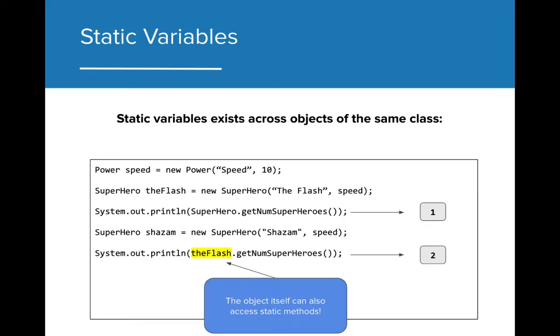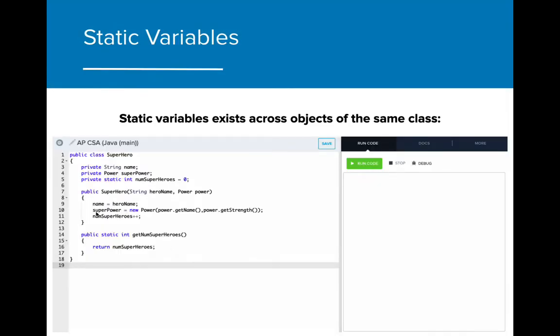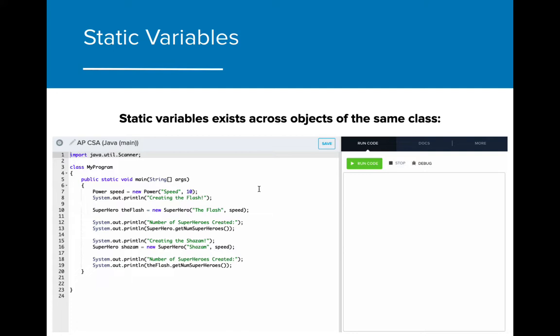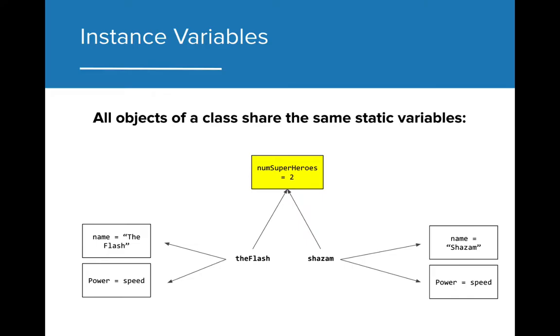We can actually call this using the object names as well. Since every object shares the static variable data, static methods and variables can be used by an object of the class as long as the access is public. Here's a live demo of static variables in action. As opposed to the instance variables, which are exclusive to the reference, static variables are shared across all objects. We can see here that while the Flash and Shazam have their own name and power values, they both share the static variable numSuperheroes.